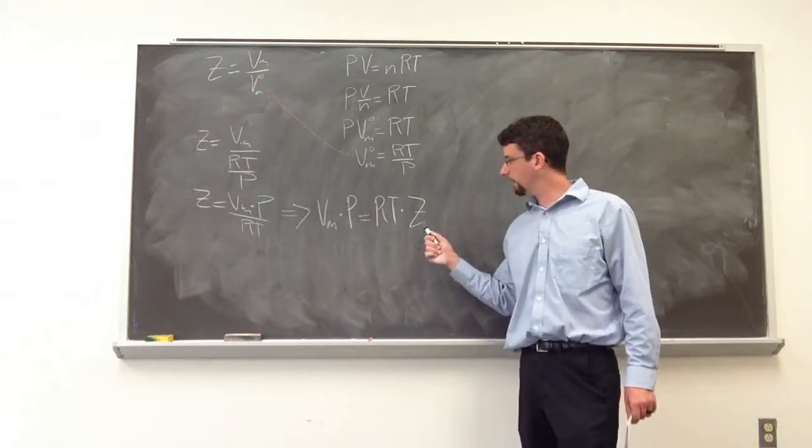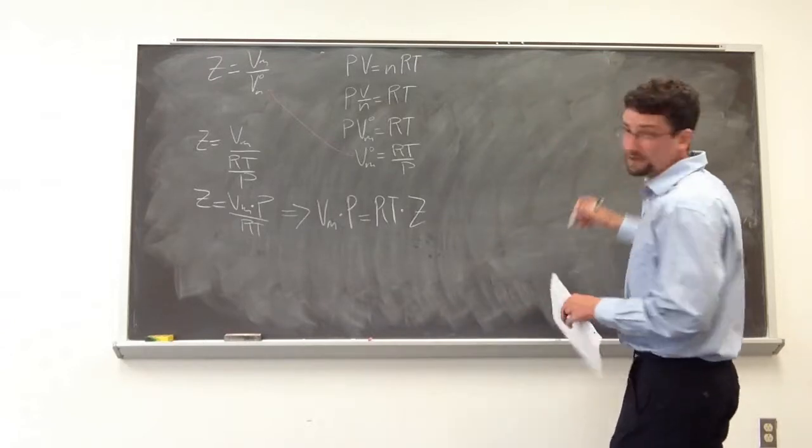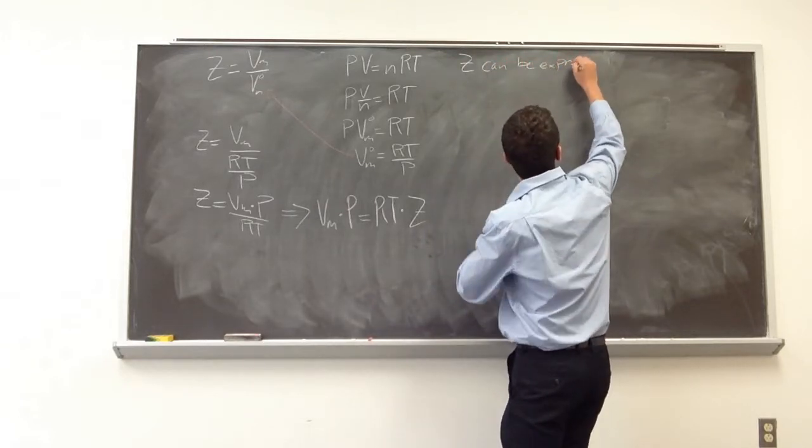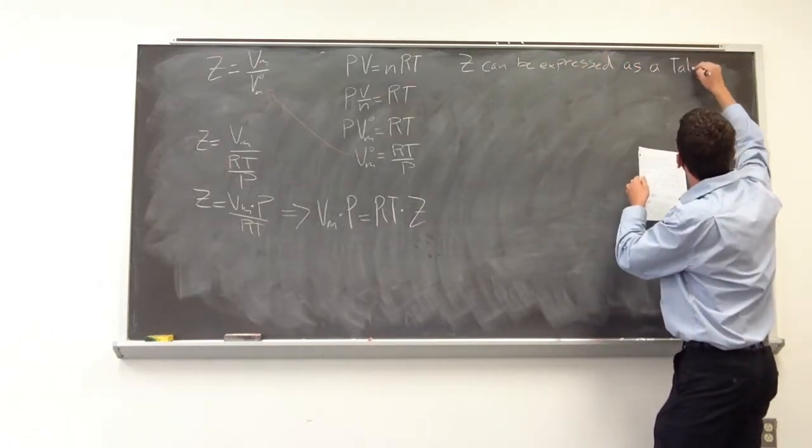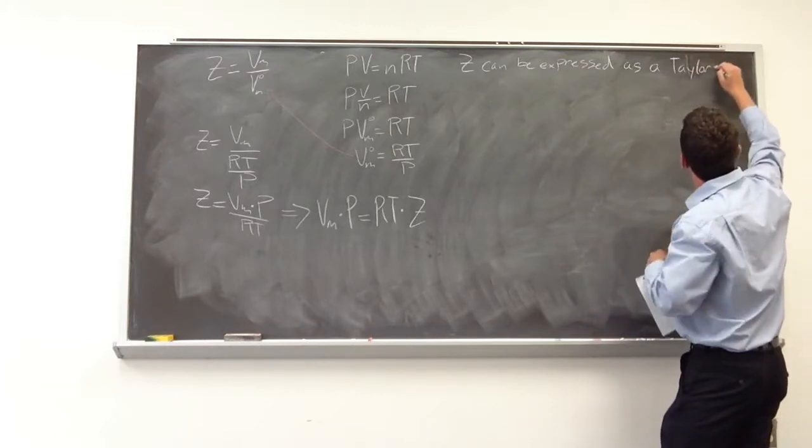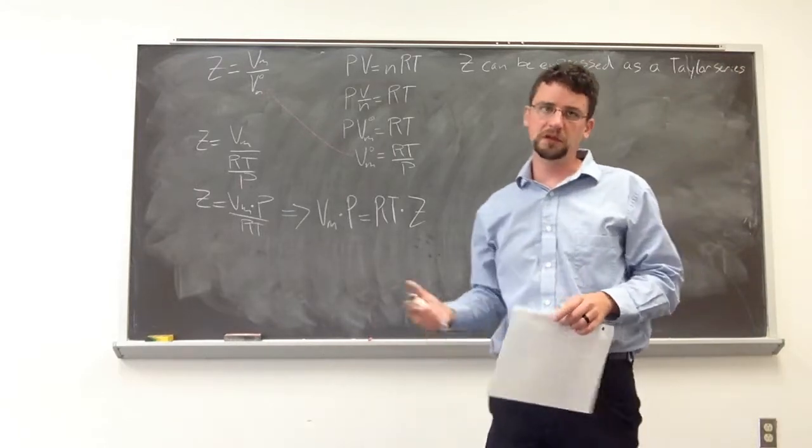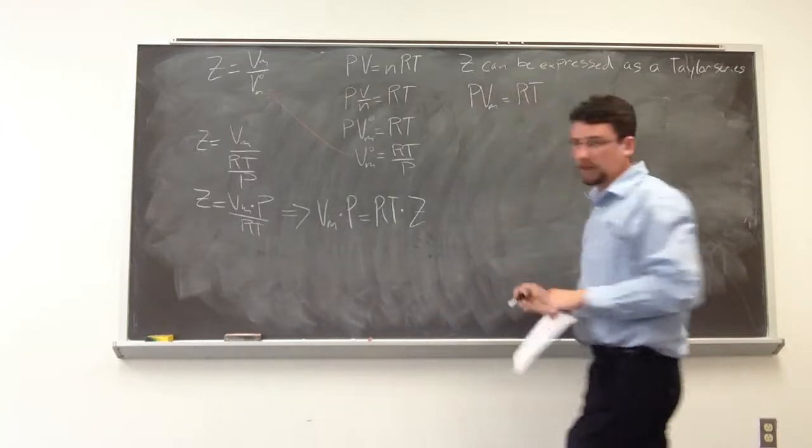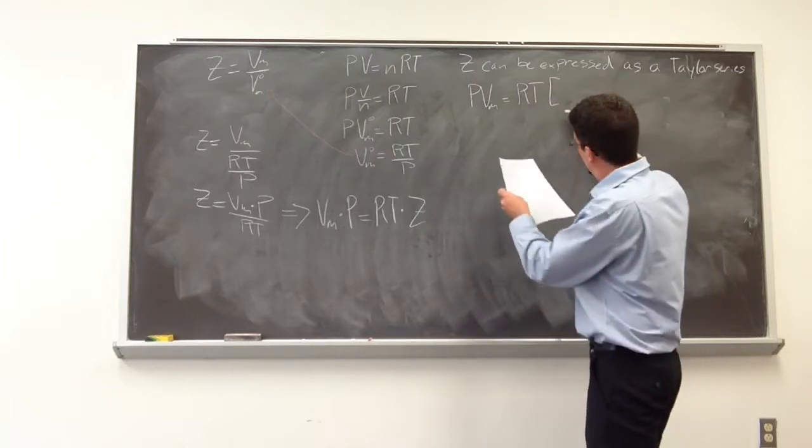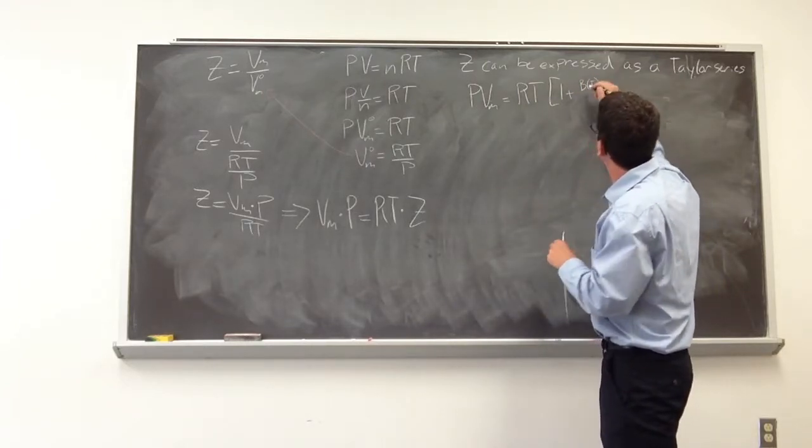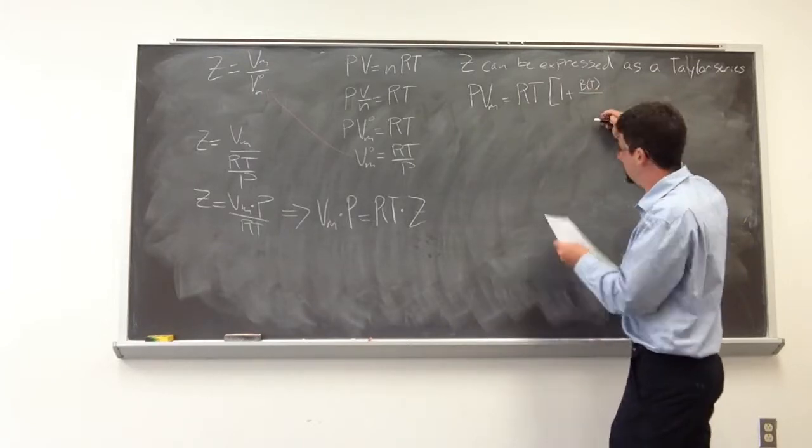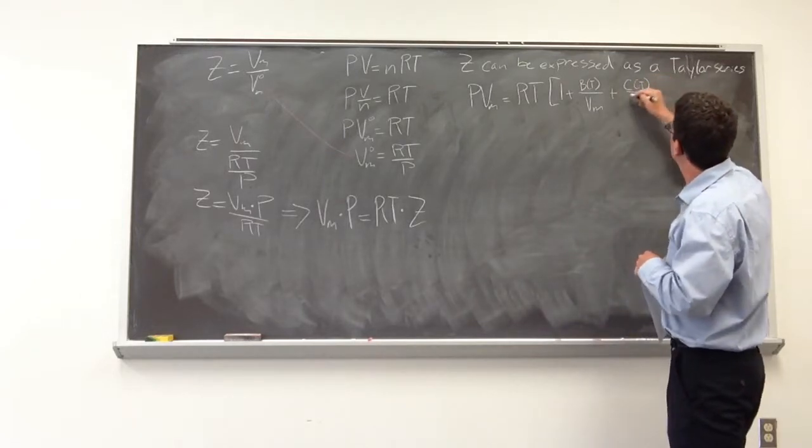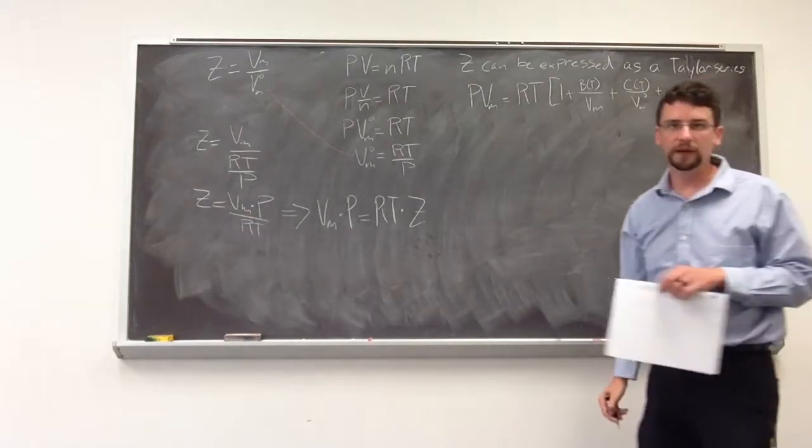So that's going to be a useful equation that we can use. If we know our compression factor at this given temperature and pressure, then we should be able to figure out our molar volume pretty quick, or any of these parameters, as long as we have a couple of them. But how do we get this? Can we delve deeper into that compression factor? Z can actually be expressed as a Taylor series. So the compression factor can be expressed as a Taylor series.